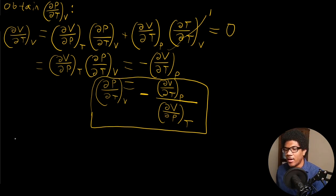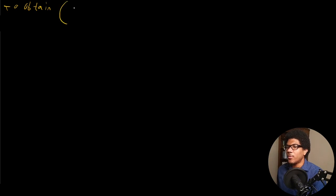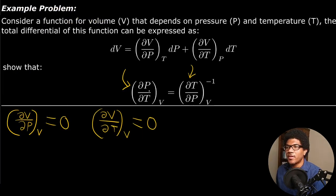Now we want to obtain the other term — DT/DP at constant volume. We already got a term for DP/DT at constant V. Now we just need to get an explicit expression for DT/DP at constant V and see if they're equal.